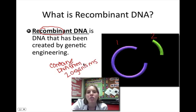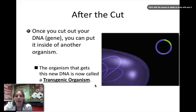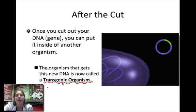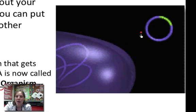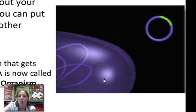Now let's talk about what we can do with that DNA. We can take that recombinant DNA and put it inside of another organism. This new organism will be called a transgenic organism — transgenic meaning it has genes from multiple places inside of it. So here I'm going to take this recombinant DNA and put it inside of this organism. What I'll have in the end, once I've created that, is something called a transgenic organism.